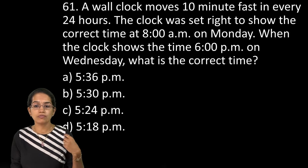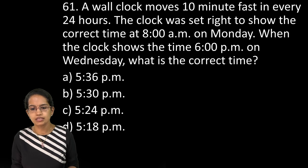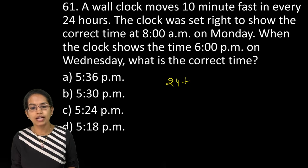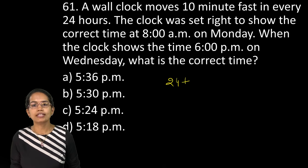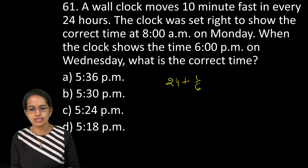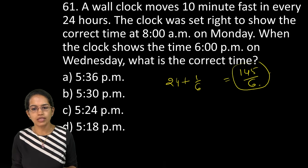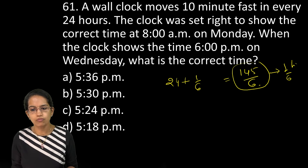The wall clock moves 10 minutes faster in every 24 hours. That means the speed is 24 plus 1/6, so that is 10 minutes faster. So it is 1/6. Now when you solve it, it is 145 by 6. Now this much is gained during how much? This much is gained during 1 hour.